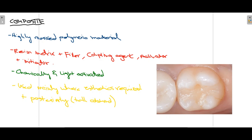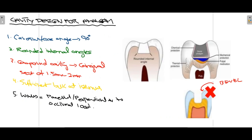Talking about the cavity design used for amalgam — you can see this tooth structure where initially there was a caries lesion, and when it has been removed, a particularly designed cavity has been prepared to receive the amalgam restoration. Firstly, the cavo-surface angle should be 90 degrees. You can see this internal wall of the cavity and the external wall of the tooth — where they meet, the angle is formed and that is known as the cavo-surface angle. If it is acute, less than 90 degrees, there are increased chances that the edge can break.